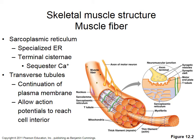Transverse tubules, or T-tubules, are green pores visible in the cell. The action potential propagates along the sarcolemma and then goes down the T-tubules to enter the interior of the cell. T-tubules are invaginations of the sarcolemma so the action potential travels both along the surface and into the interior. T-tubules lie very close to the sarcoplasmic reticulum, and action potentials going down them open calcium channels, releasing calcium.